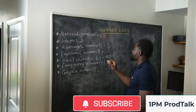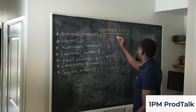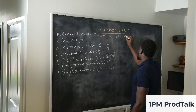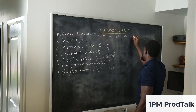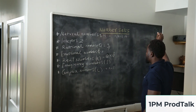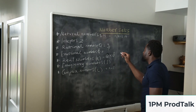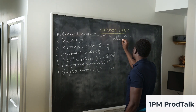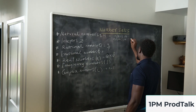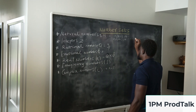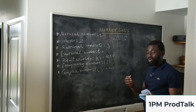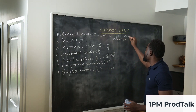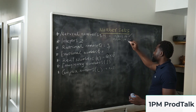Natural numbers are any numbers that start from 1, 2, 3, 4, and so on into infinity. Or it could also be 0, 1, 2, 3, 4, and so on to infinity. Depending on the department of mathematics that you are in, you could be using one or the other.